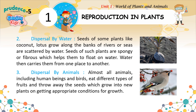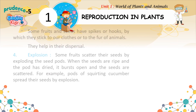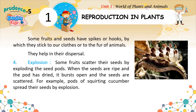Dispersal by animals: almost all animals, including human beings and birds, eat different types of fruits and throw away the seeds, which grow into new plants when they get appropriate conditions for growth. Some fruits and seeds have spikes or hooks by which they stick to our clothes or to the fur of animals, helping in their dispersal.